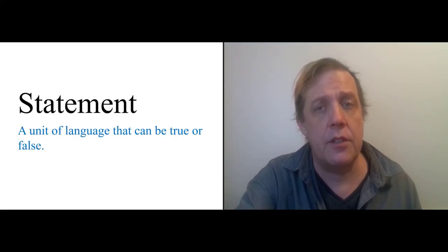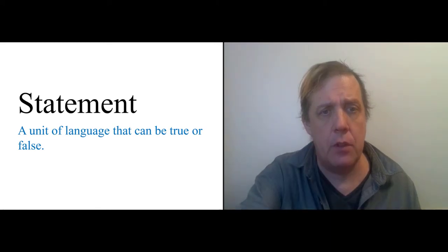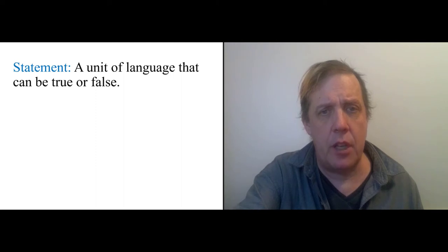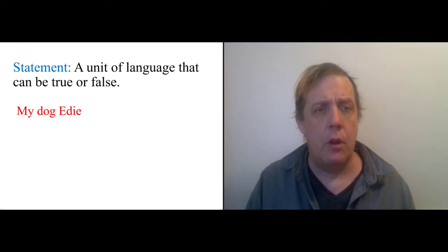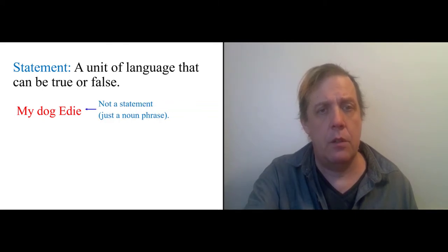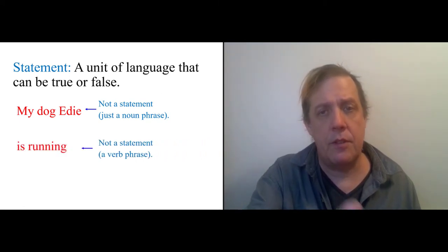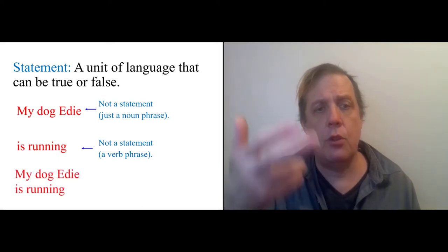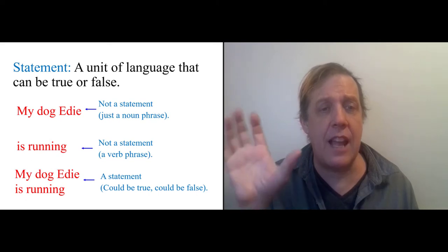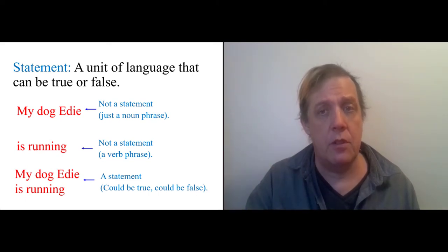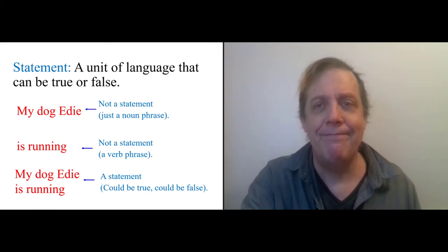So let's dig down deeper on these ideas. I said a statement is a unit of language, a stretch of words that can be true or false. Let's think about this in more detail. If you have a phrase, my dog Edie, that's just a single noun phrase. It's not a statement, right? It's just a noun phrase. Is running, not a statement. That's a verb phrase. You put them together, you get a statement. My dog Edie is running. Now you have something that could be true or it could be false, right? Edie passed away some years ago. She's running in heaven.